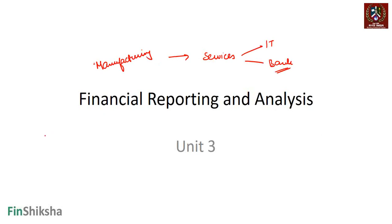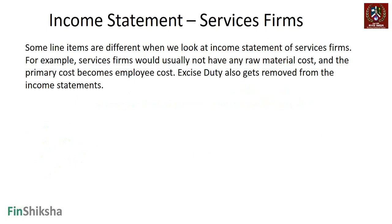Services firms will typically not have any raw material cost, or if they do, it will be a very small component. The biggest cost for a services firm is employee cost, because services firms have a lot of employees — they're basically basing their service on people. So primarily employee cost becomes the biggest component whenever you are looking at a services firm. There is no raw material cost usually, and excise duty also gets removed — excise duty was a duty paid on manufacturing, so that goes away from the income statement.